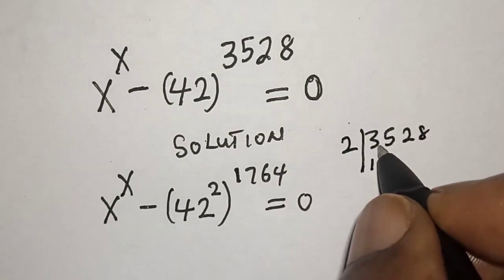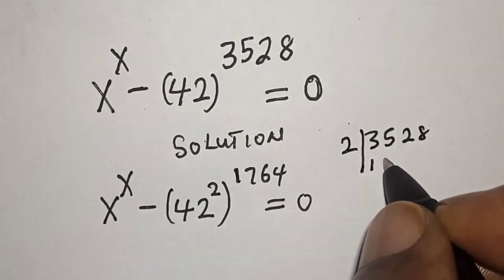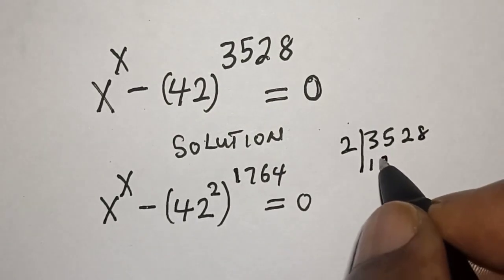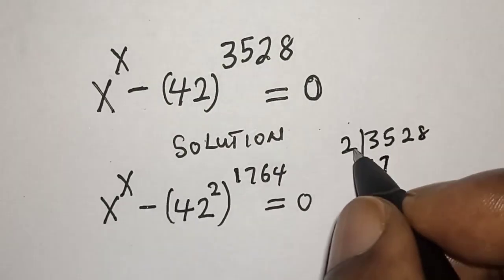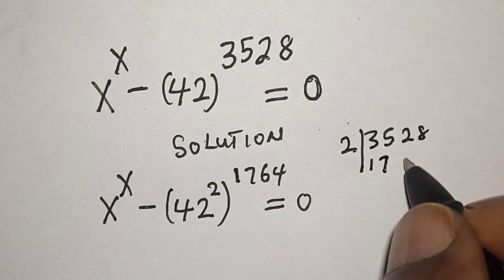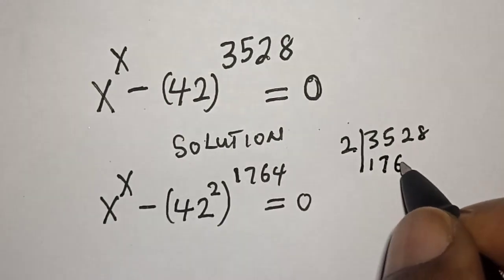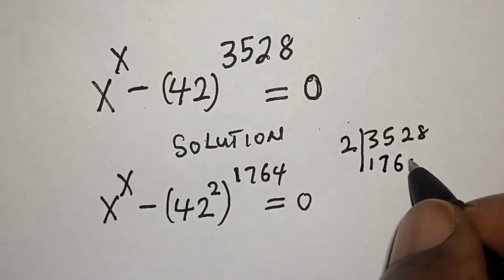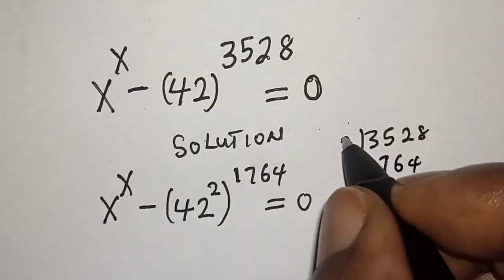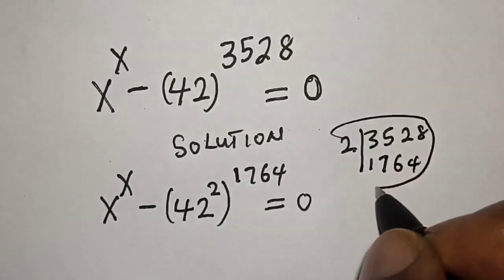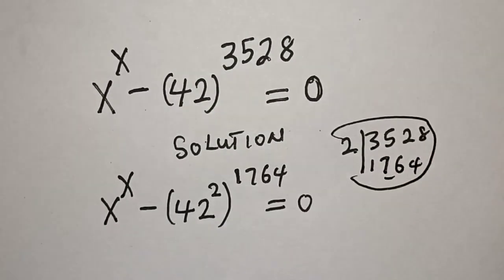2 into 3: 1, remainder 1. Into 15, that is 7. Then 2 into 12 is 6, and 2 into 8 is 4. So that is how we get this value of 1764.